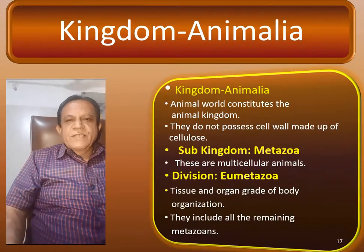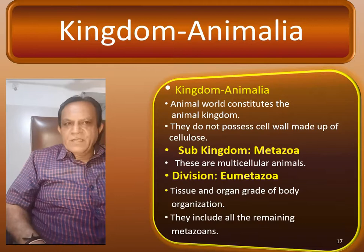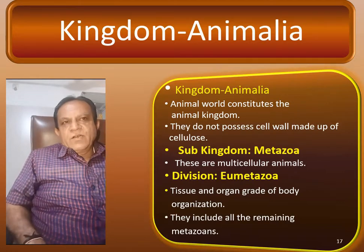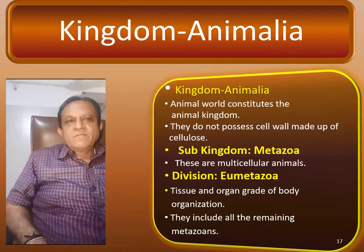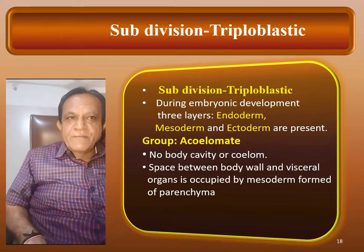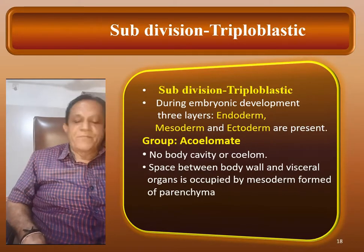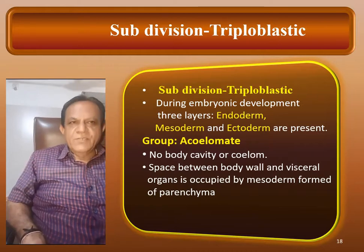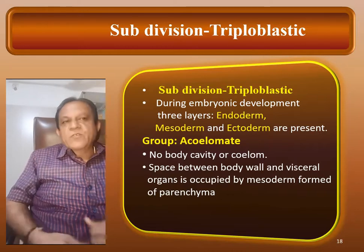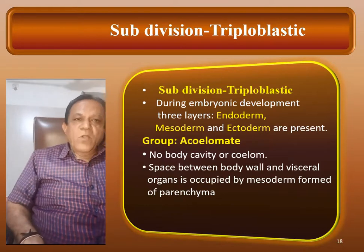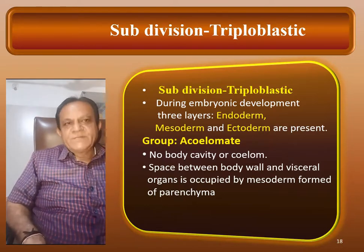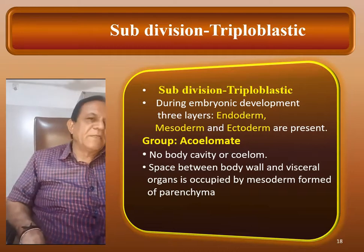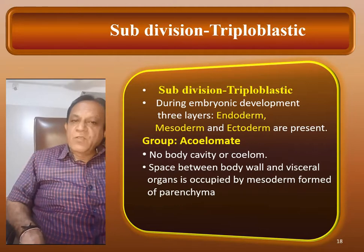The reasons will remain the same: Kingdom Animalia, Sub-Kingdom Metazoa, Division Eumetazoa, Sub-Division Triploblastic. We have learned up to Sub-Division, including Diploblastic, but here Triploblastic. During embryonic development, three layers — endoderm, mesoderm, and ectoderm — are present. In Diploblastic, mesoderm is absent; only endoderm and ectoderm are present during embryonic development. Here all three germinal layers are present, and Group Acoelomate means no body cavity or coelom — coelom is absent. Space between body wall and visceral organs is occupied by mesoderm in the form of parenchyma.